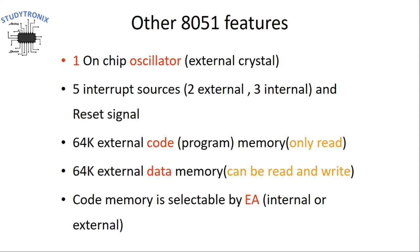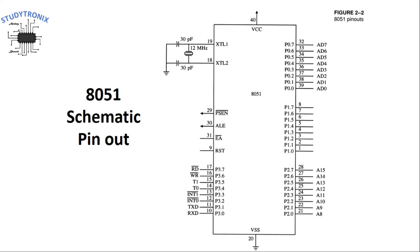The code memory is selectable by the EA bar pin available on 8051. When the EA bar pin is connected to ground, it indicates that we are going to access the program stored in external ROM. When the EA bar pin is connected to VCC, it means we are going to access the program stored in internal ROM.